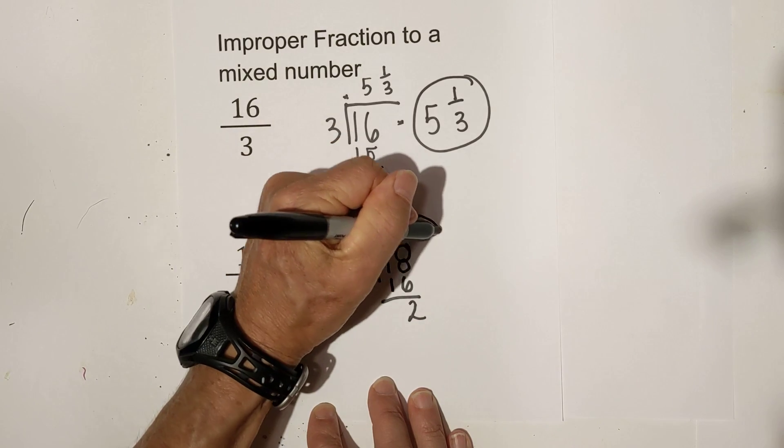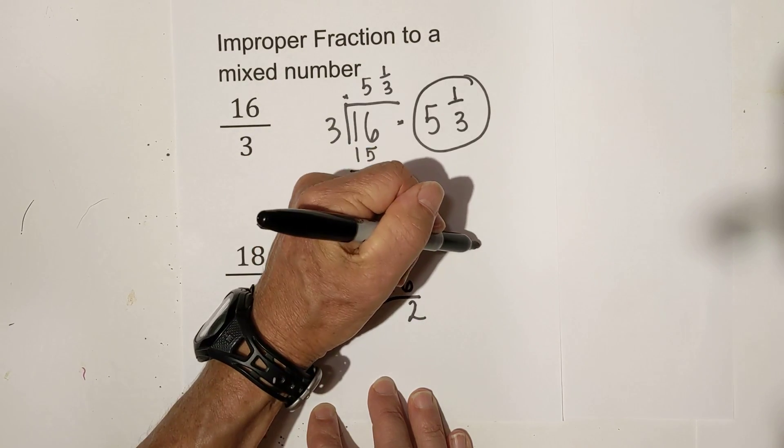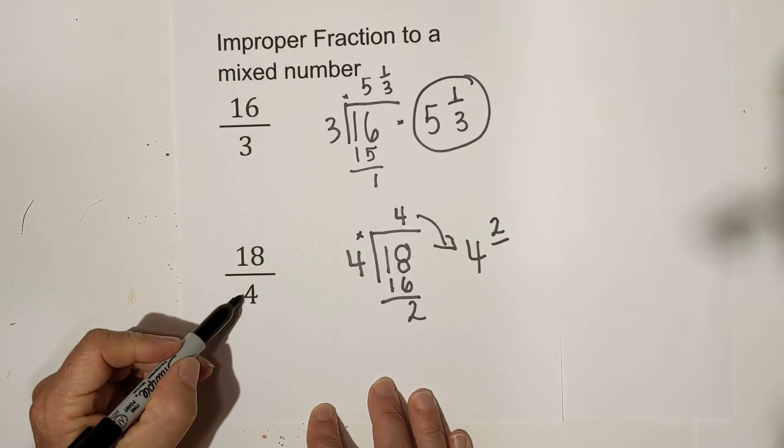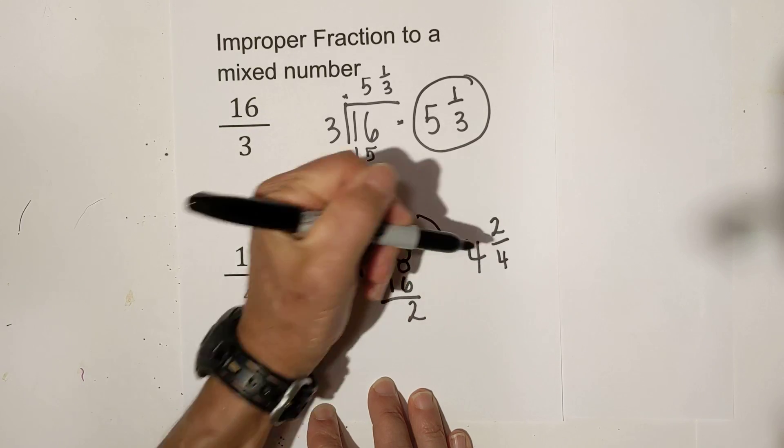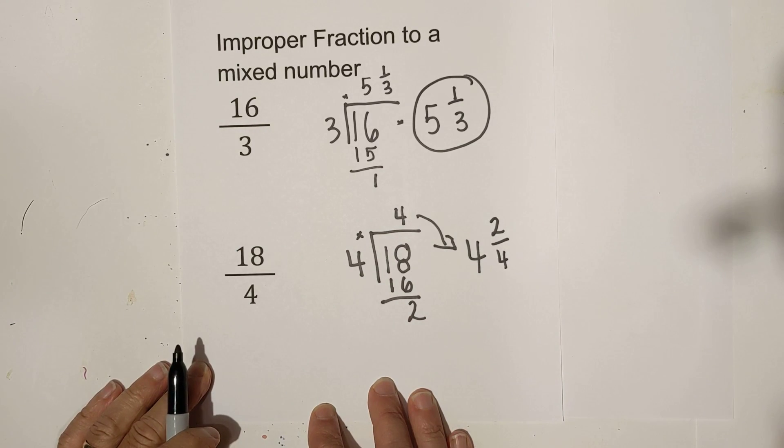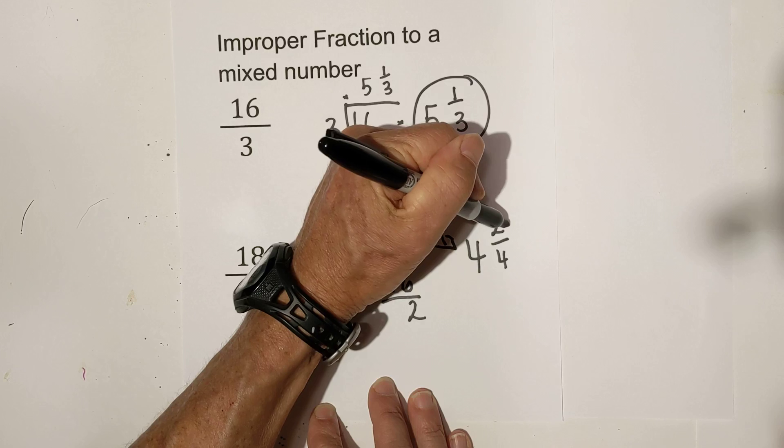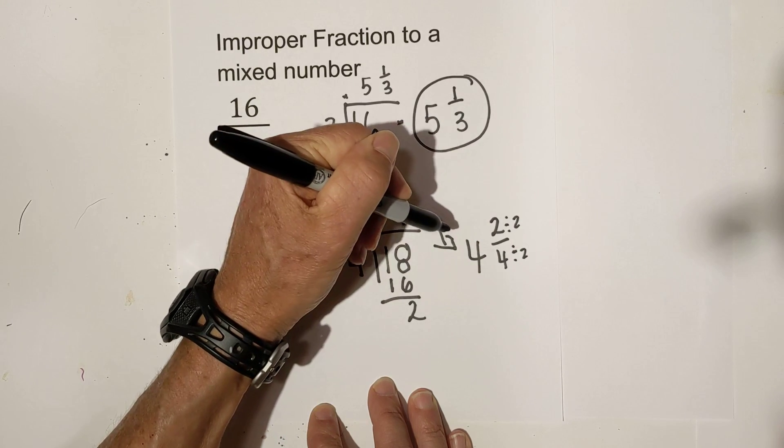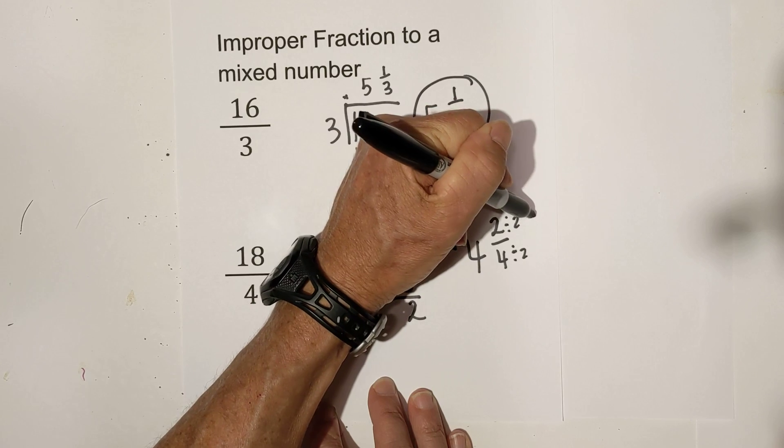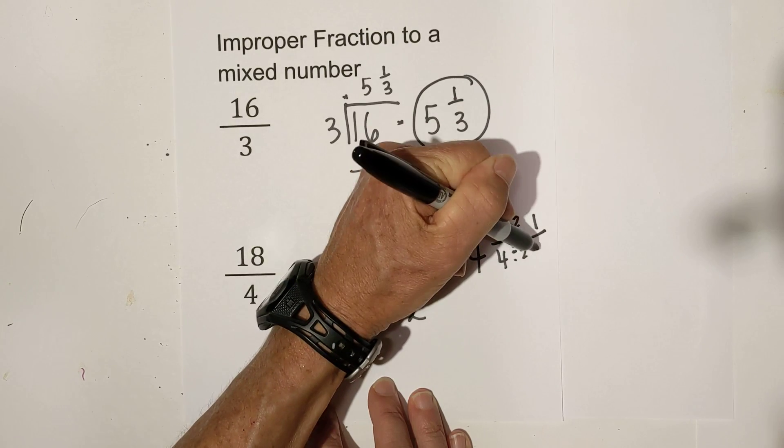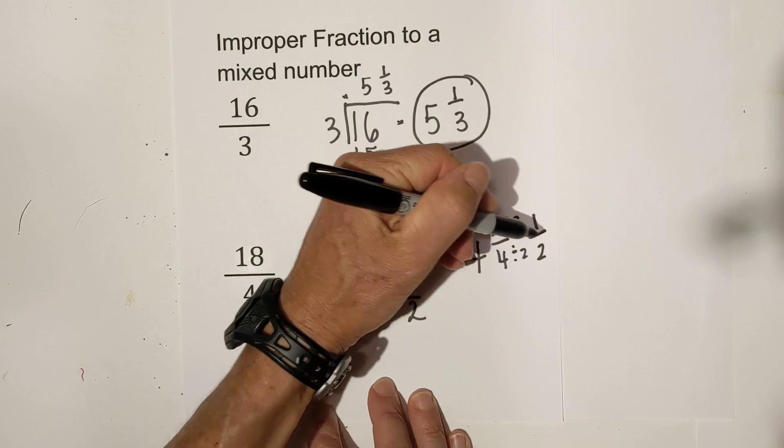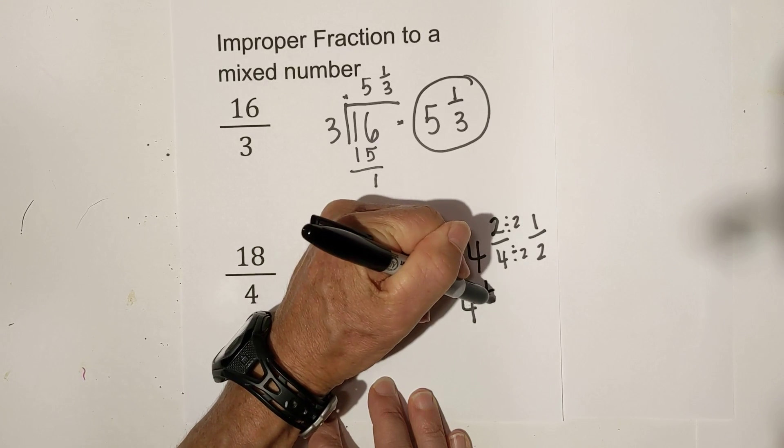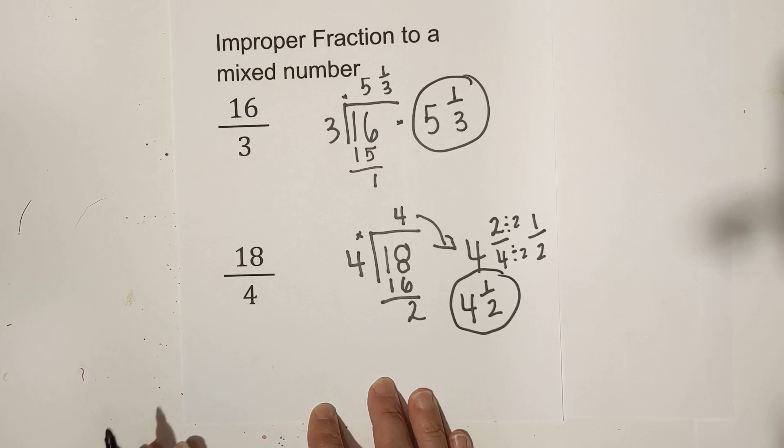I am going to move this down here so you can see it a little bit better. We have 4 and then we go 2 over the denominator which is 4th and we can simplify this because we can divide both of these numbers by 2. So that becomes 2 divided by 2 is 1, 4 divided by 2 is 2. So this becomes 4 and 1 half.